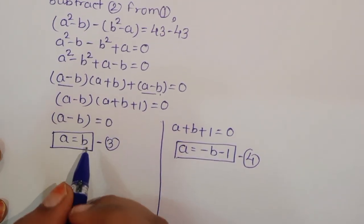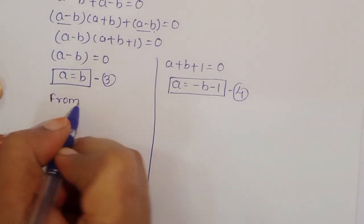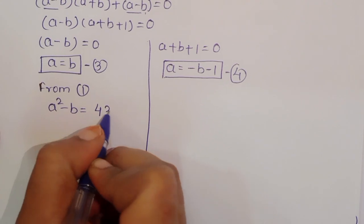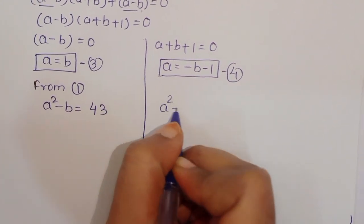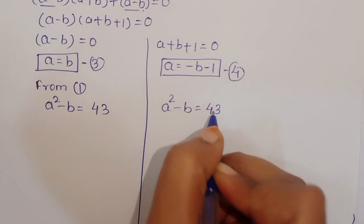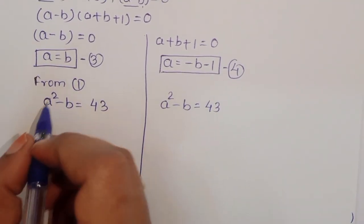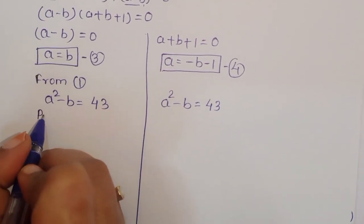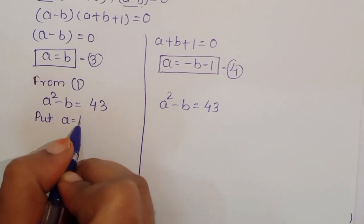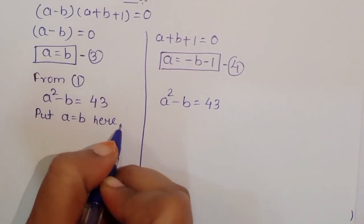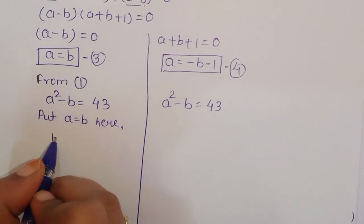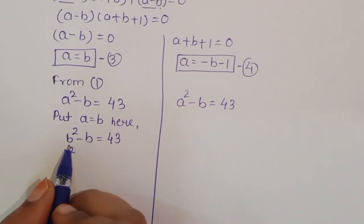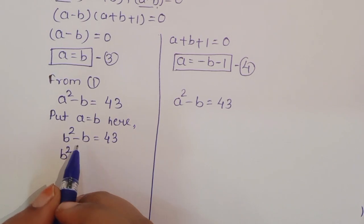From equation 1, we know a squared minus b is equal to 43. For the first case, substituting a equal to b into this equation, we get b squared minus b is equal to 43.